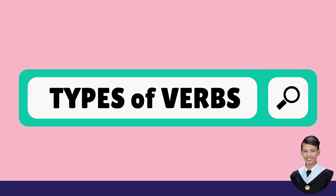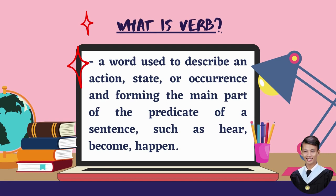What is a verb? A verb is a word used to describe an action, state, or occurrence, and forming the main part of the predicate of a sentence, such as hear, become, happen.